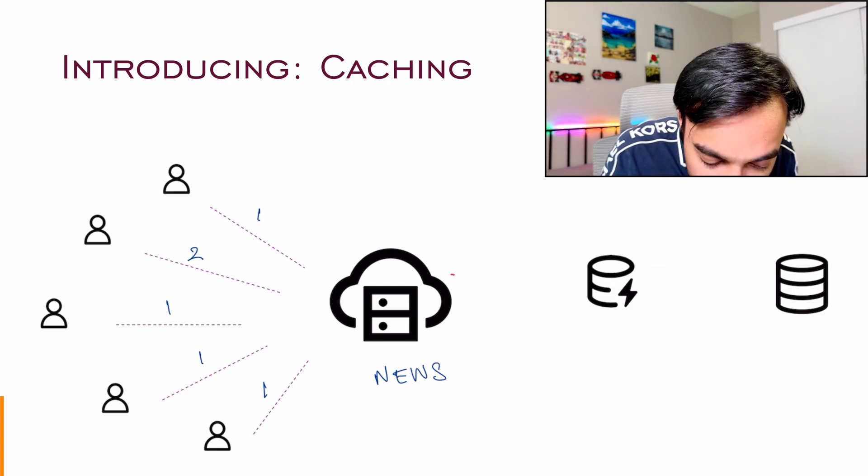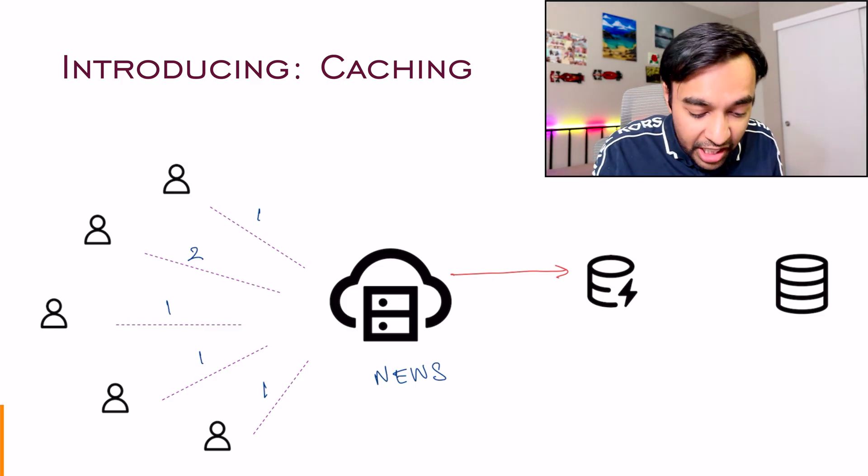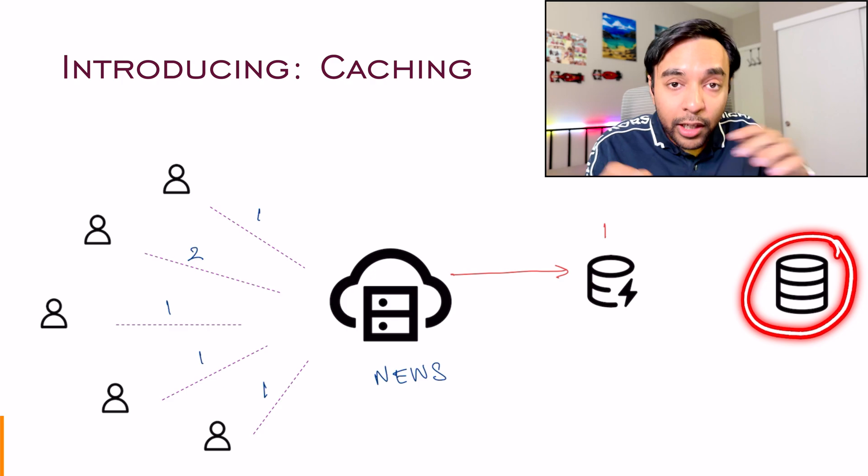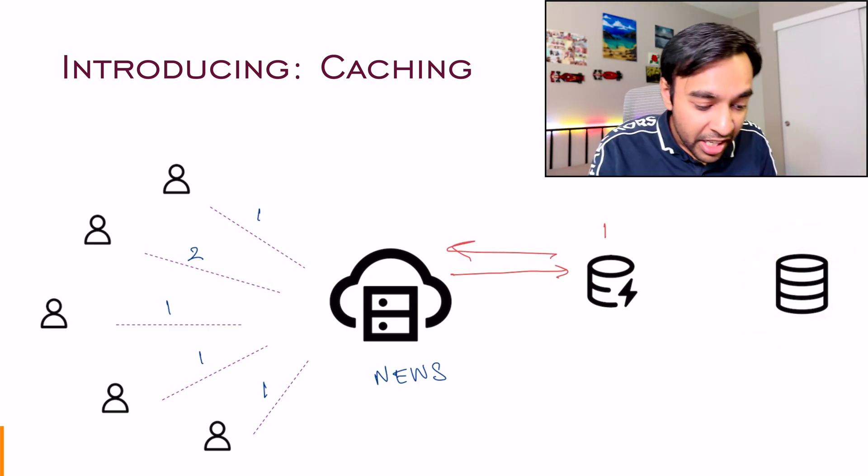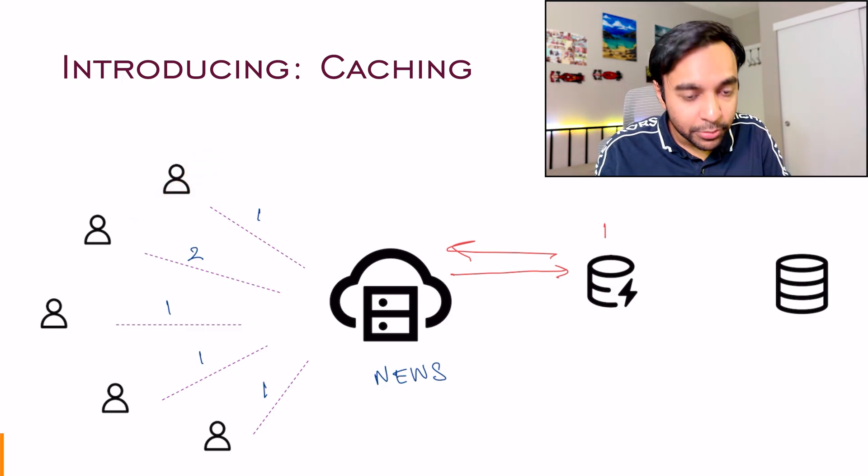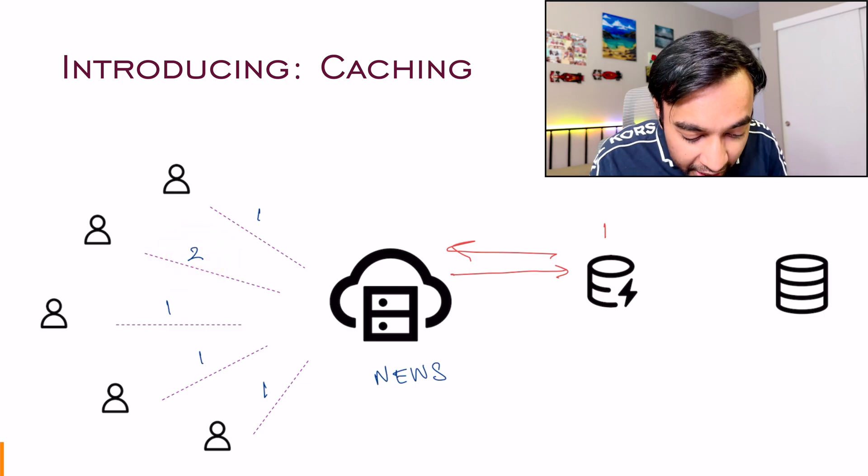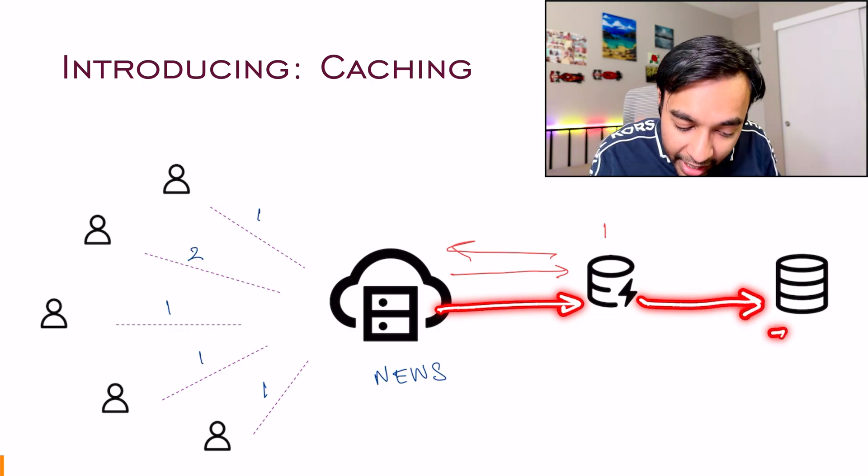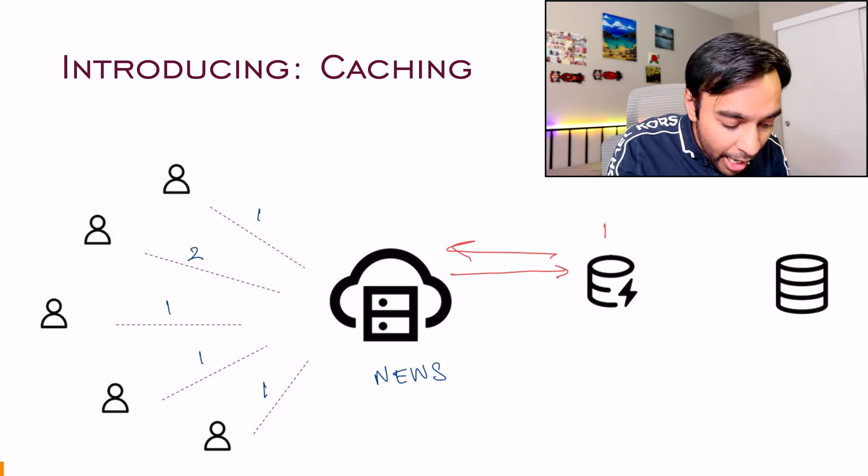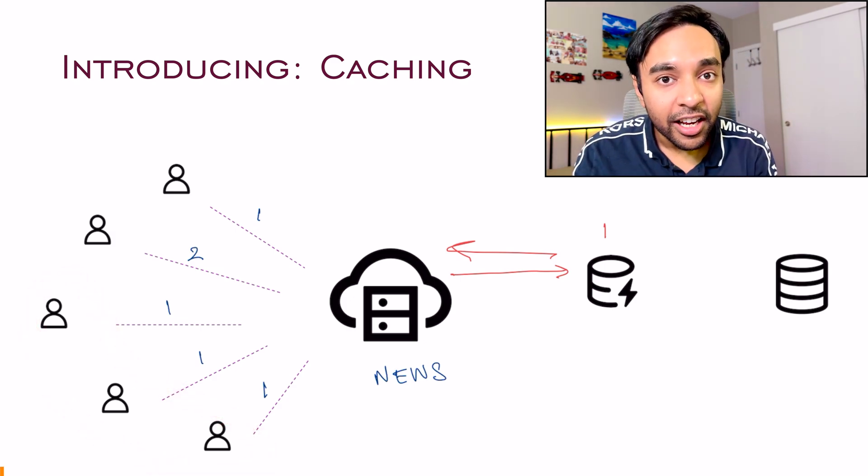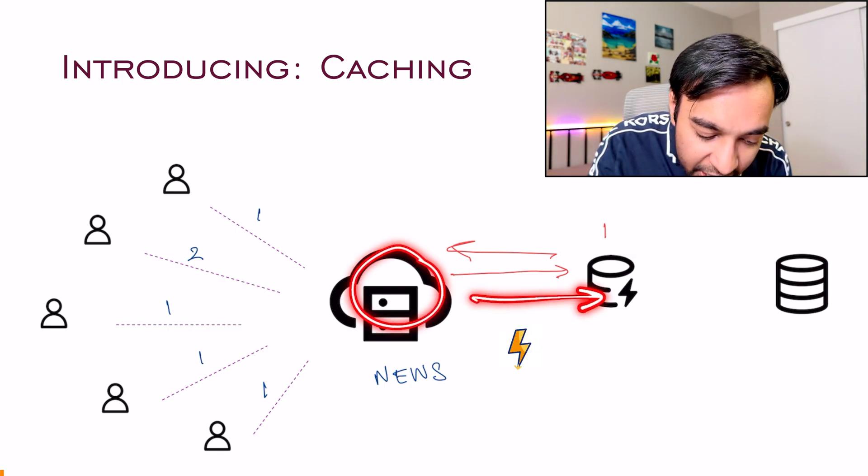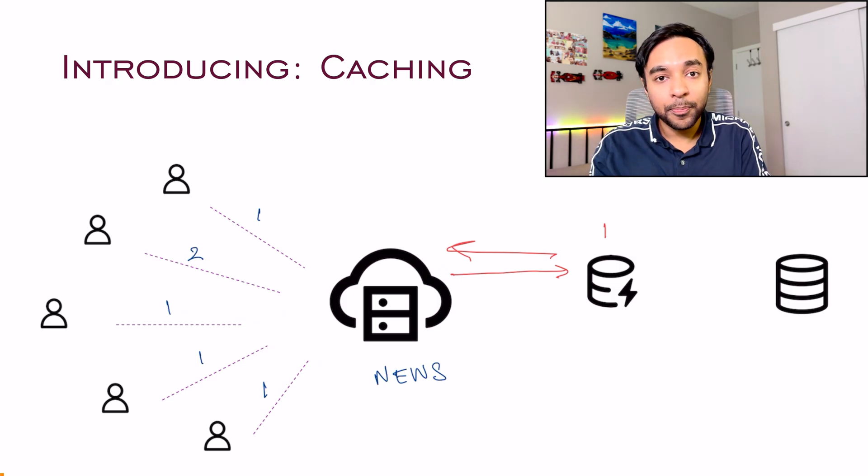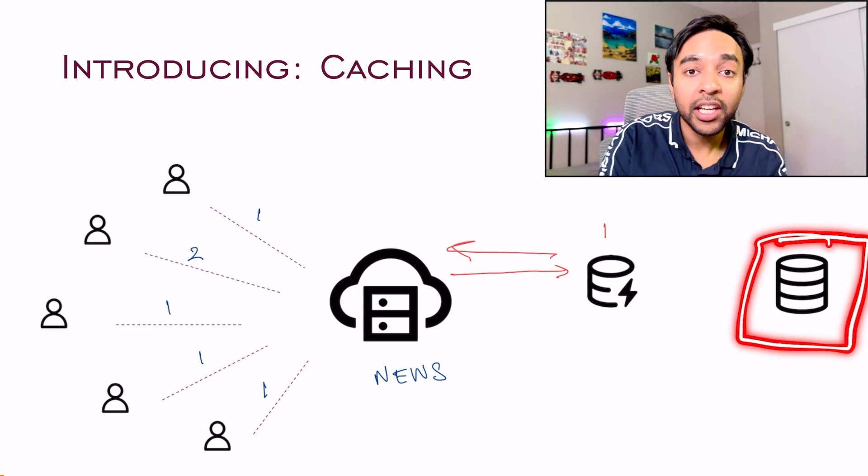And now what happens? This server will try to first look into the cache. In the cache, if it finds article one, then it does not need to go and look into your database. It can simply return this article from the cache and this user will be very happy. Then comes user two. User two is requesting for article two. The server will again look into the cache. It cannot find the article in here. So now you will go into your database and then get the result and then you will go onto the user again. But what happens for these other users now? Once again, they want to look at article one. So this server will just query the cache and it can serve all these three clients very fast. We are reducing how many times we have to look up in this main memory. And this is saving us a lot of time.